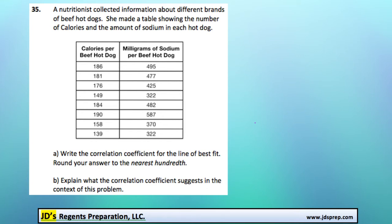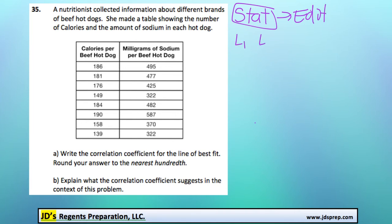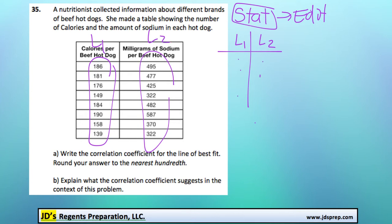We can use our calculator to help us out with that. When you press the stat button and hit edit, input your x and y values into the table — all of the x values will be your L1 numbers, and all of the y values will be the L2 numbers. Once you've got that done, press stat again, head to calc, and then press to find the linear regression equation. From there, the correlation coefficient is the value of r.